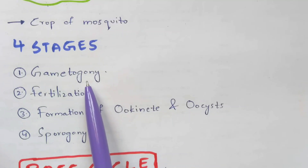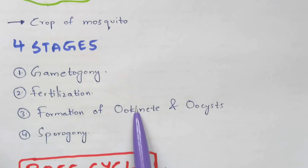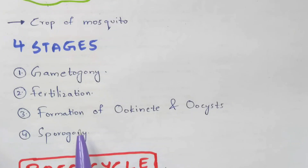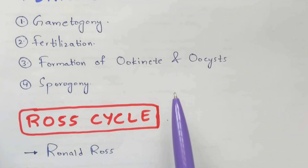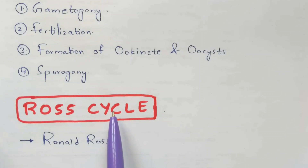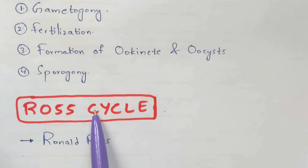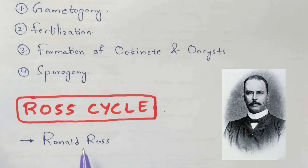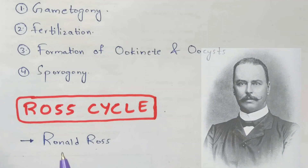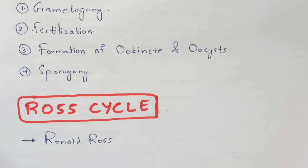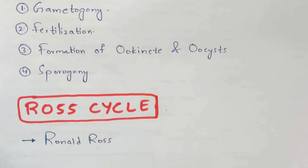There are four stages involved in Plasmodium vivax in mosquito phase: gametogony, fertilization, formation of ookinate and oocyst, and sporogony. This phase is also called the Ross cycle, because it was discovered by scientist Ronald Ross, who was awarded the Nobel Prize for his discovery. Now I'm going to explain this Ross cycle life cycle.